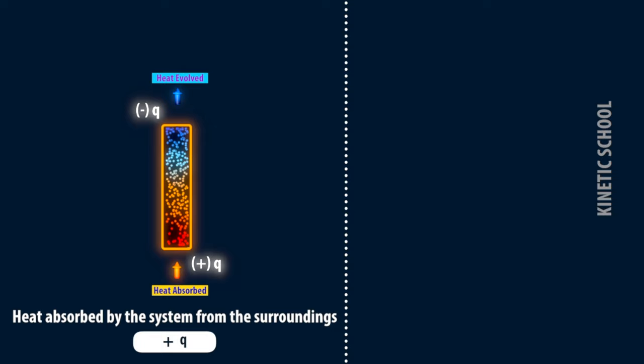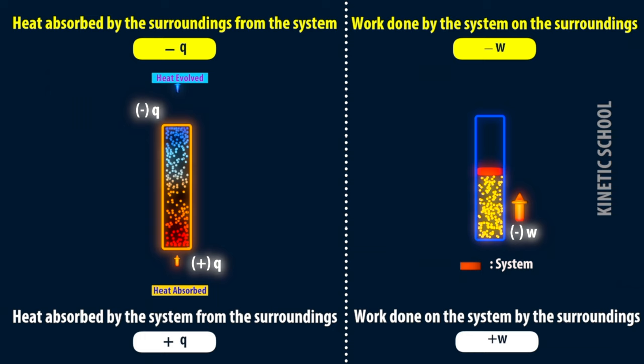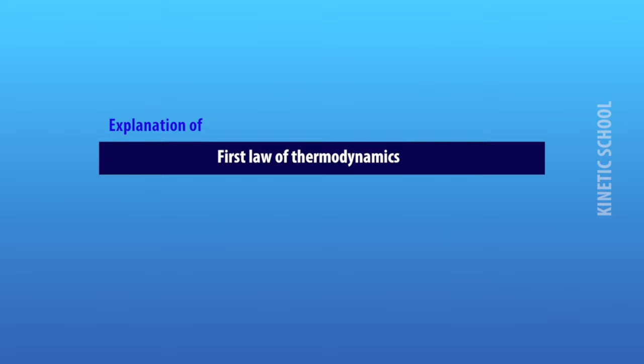As we know, heat absorbed by the system from the surroundings is +Q. Heat absorbed by the surroundings from the system is -Q. Work done by the system on the surroundings is -W. Work done on the system by the surroundings is +W.